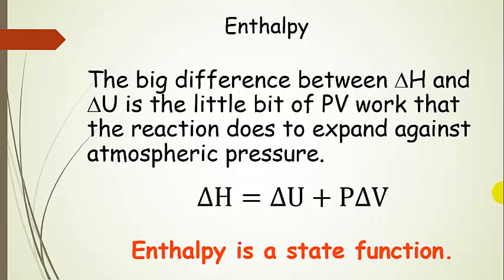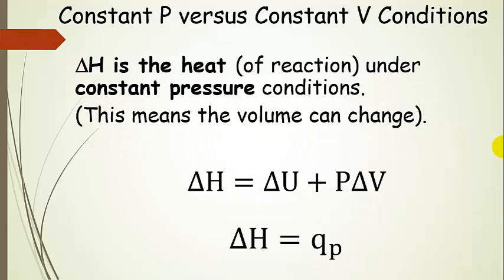We're going to use that in various ways to calculate these heats of reaction. Delta H is actually the heat of reaction under constant pressure conditions, so we can describe that using delta H equals delta U plus P times delta V. By definition, the enthalpy is the heat at constant pressure.